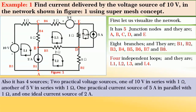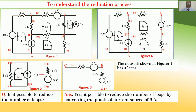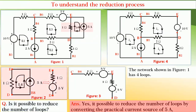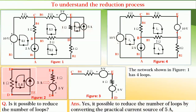It has 4 sources: 2 practical voltage sources — one of 10 volts in series with 1 ohm, another of 5 volts in series with 1 ohm — one practical current source of 5 amperes in parallel with 1 ohm, and one ideal current source of 2 amperes. It is possible to reduce the number of loops by converting the practical current source of 5 amperes to a practical voltage source of 5 volts in series with 1 ohm, as shown in figure 2.